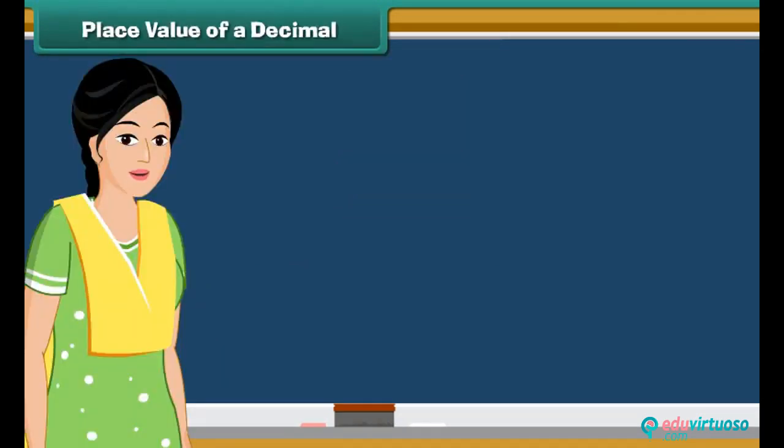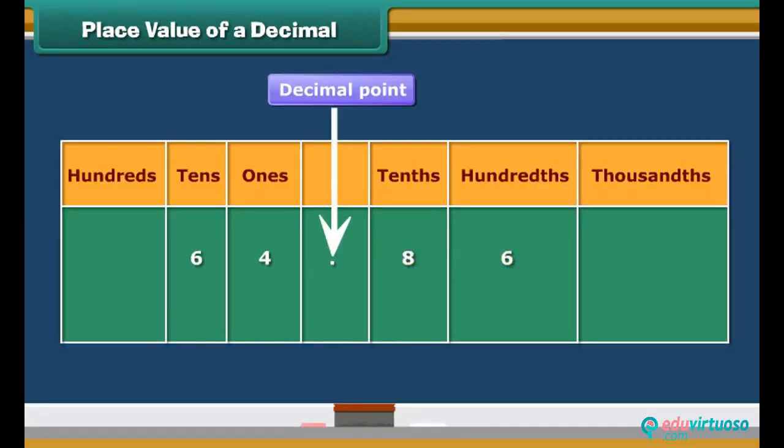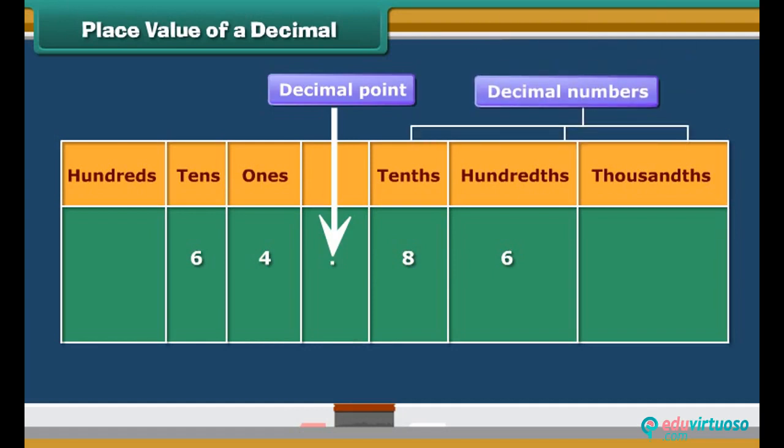Well, writing decimals is pretty easy. Numbers to the right of the decimal point are decimals. The place values are tenths, hundredths, thousandths, and so on.